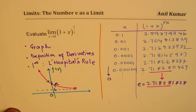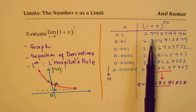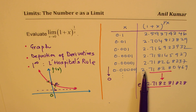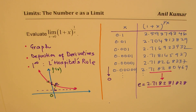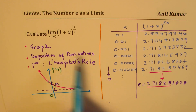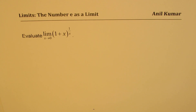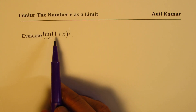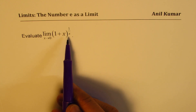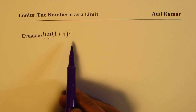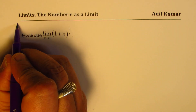So that is one way of doing it — you could use a graphing calculator or estimate using values and a calculator. Now let us see how to prove this using the definition of derivatives. We will apply the second method of finding the limit of 1 plus x to the power of 1 over x, and that is by the definition of derivatives.